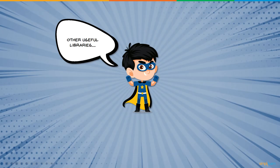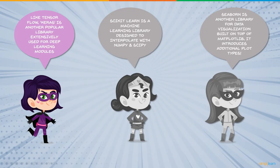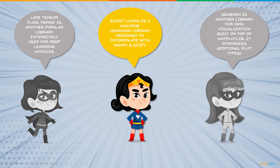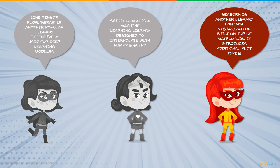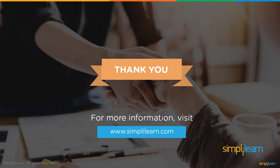That was about the leading Python libraries in the field of data science. Along with these libraries, data scientists are also leveraging some other useful libraries. For example, Keras is another popular library extensively used for deep learning and neural network modules — Keras wraps both TensorFlow and Theano backends, making it a good option if you don't want to dive into the details of TensorFlow. Scikit-learn is a machine learning library that provides almost all the machine learning algorithms you need, designed to interoperate with NumPy and SciPy. Seaborn is another library for data visualization — it's an enhancement of Matplotlib that introduces additional plot types.